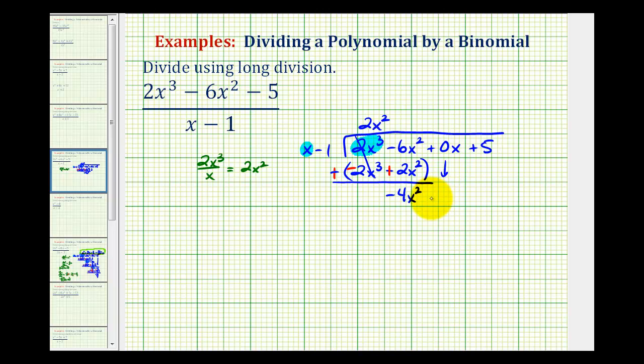Now we bring down the next term. So now we're only concerned about the x term of the divisor and -4x². We can ask ourselves, what times this x would give us -4x²? We know that would be -4x, so we can write the next term as -4x. Or the second method is to divide -4x² by x. Notice how we also get -4x.